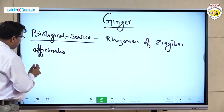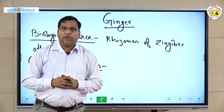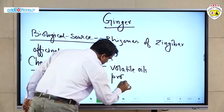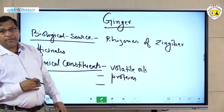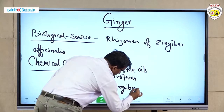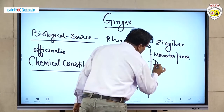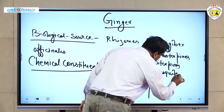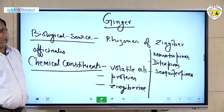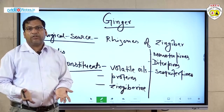Chemical constituents of ginger: ginger contains volatile oils, proteins, and a specific phytoconstituent called gingerine (alpha-gingerine). It also contains terpenoids like monoterpenes, diterpenes, and sesquiterpenes. These phytoconstituents act as a carminative, expelling gases from the GIT and regulating gastrointestinal functions.